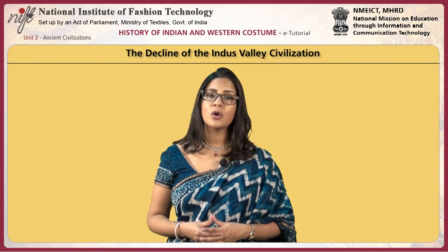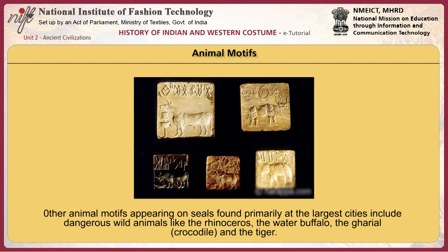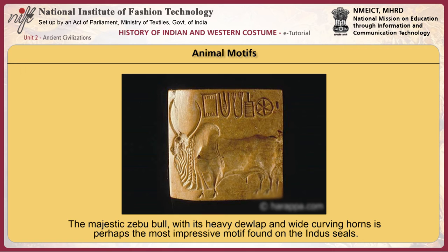Other animal motifs appearing on seals found primarily at the largest cities include dangerous wild animals like the rhinoceros, the water buffalo, the gharial (the crocodile) and the tiger. All of these animals would have been familiar to people living at the edge of the thick jungles and swampy grasslands of the Indus plain, and they were revered as totemic animals closely associated with important myths and legends. The majestic zebu bull with its heavy dewlap and wide curving horns is perhaps the most impressive motif found on the Indus seals.